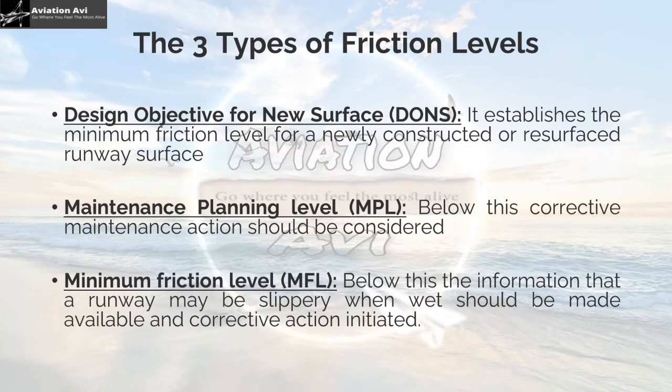To properly measure and take corrective action on the runway surface, regulators have defined three types of friction levels. First, Design Objective for New Surfaces, also called DONS — it establishes the minimum friction level for a newly constructed or resurfaced runway surface. Second, Maintenance Planning Level or MPL — below this, corrective maintenance action should be considered. Third, Minimum Friction Level or MFL — below this, information that the runway may be slippery when wet should be made available and corrective action should be initiated.